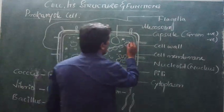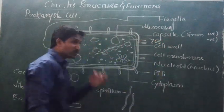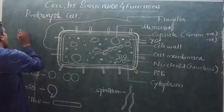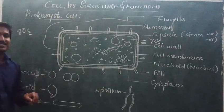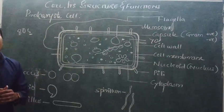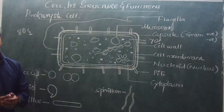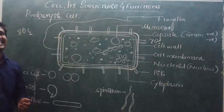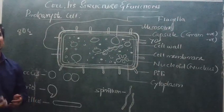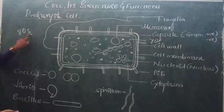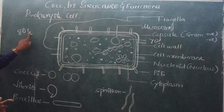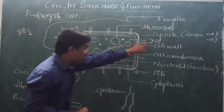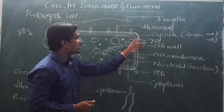These ribosomes are of 70S. Most important question for one mark: 70S type of ribosomes are found in prokaryotes, whereas in eukaryotes they are 80S. S stands for Svedberg, the name of a scientist who discovered it. It is a unit to measure the ribosome. 80S type ribosomes are present in eukaryotes, 70S type in prokaryotes.